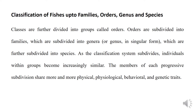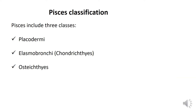Order is a rank between family and genus and species. Order is split into families, and each family belongs to different genus and species. Pisces basically includes three classes: Placodermi, Elasmobranchii (also called Chondrichthyes), and Osteichthyes.